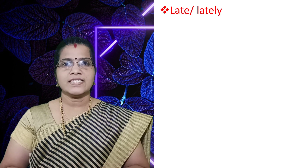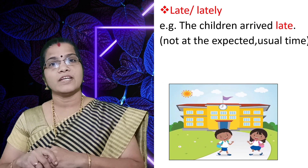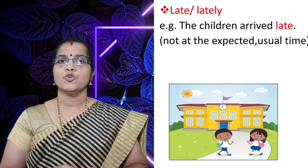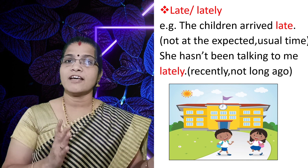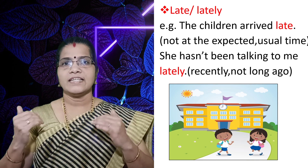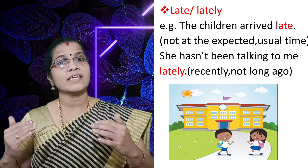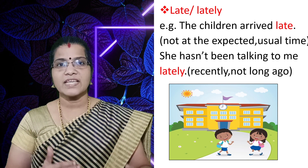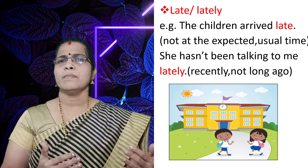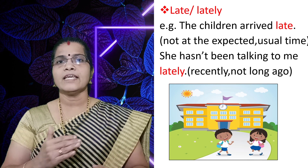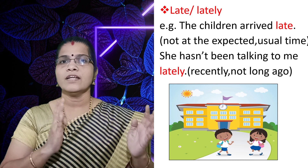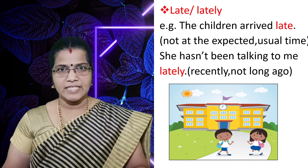The next set of words that you may often get confused are late and lately. Consider this example: the children arrive late. Late here means not at the expected time or not at the usual time — you cannot say the children arrive lately. Another example: she hasn't been talking to me lately — it means recently, maybe for a couple of days or a couple of weeks. So late and lately are different in meaning; never use these words interchangeably.